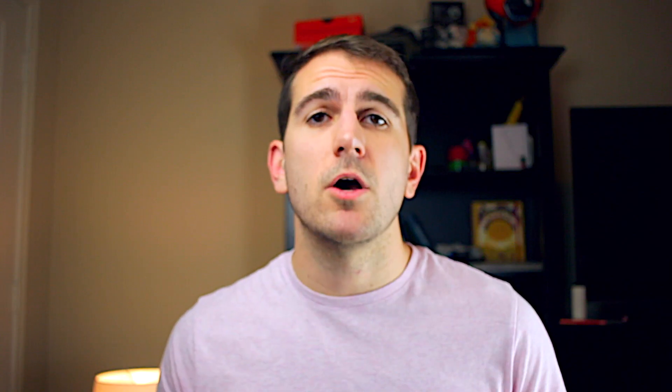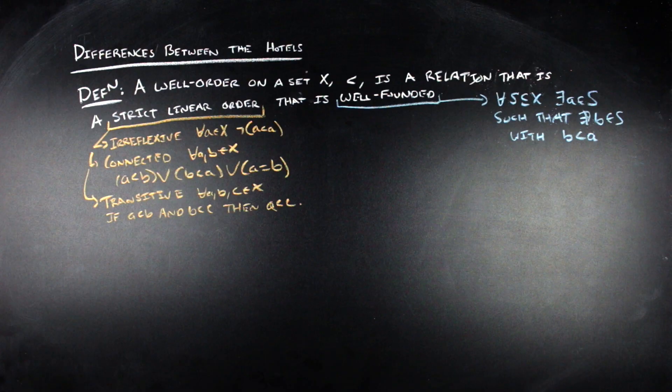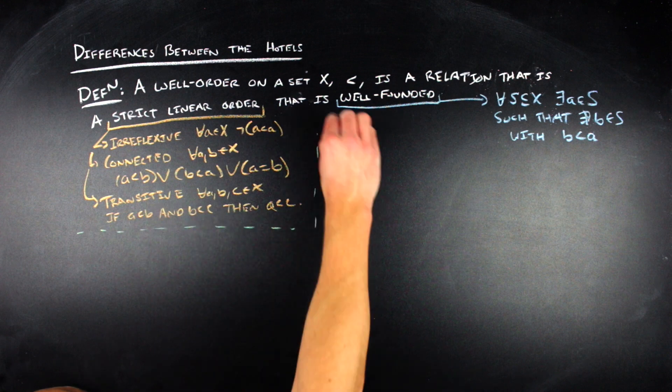For example, the natural numbers with the less-than ordering is a well-order. However, the integers with the less-than ordering is not a well-order, because it fails to have a least element when you take any subset of the integers that includes all of the negative integers.